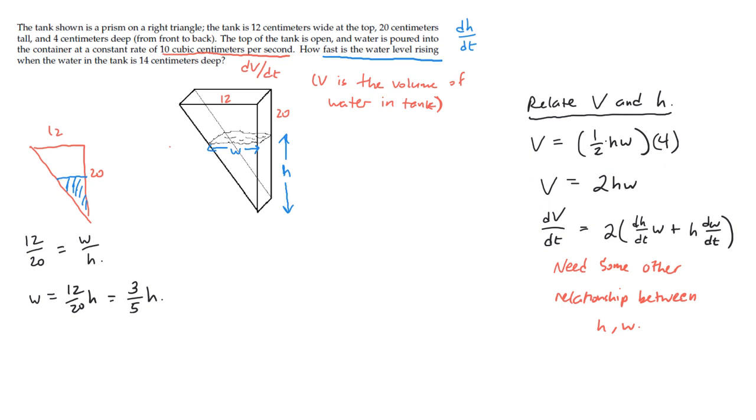That tends, in most cases, to be the easier approach if you can make it happen. And here we can. All right, so since w equals 3/5ths h, we have V equals 2h times 3/5ths h. That'll simplify to V equals 6/5ths h squared.